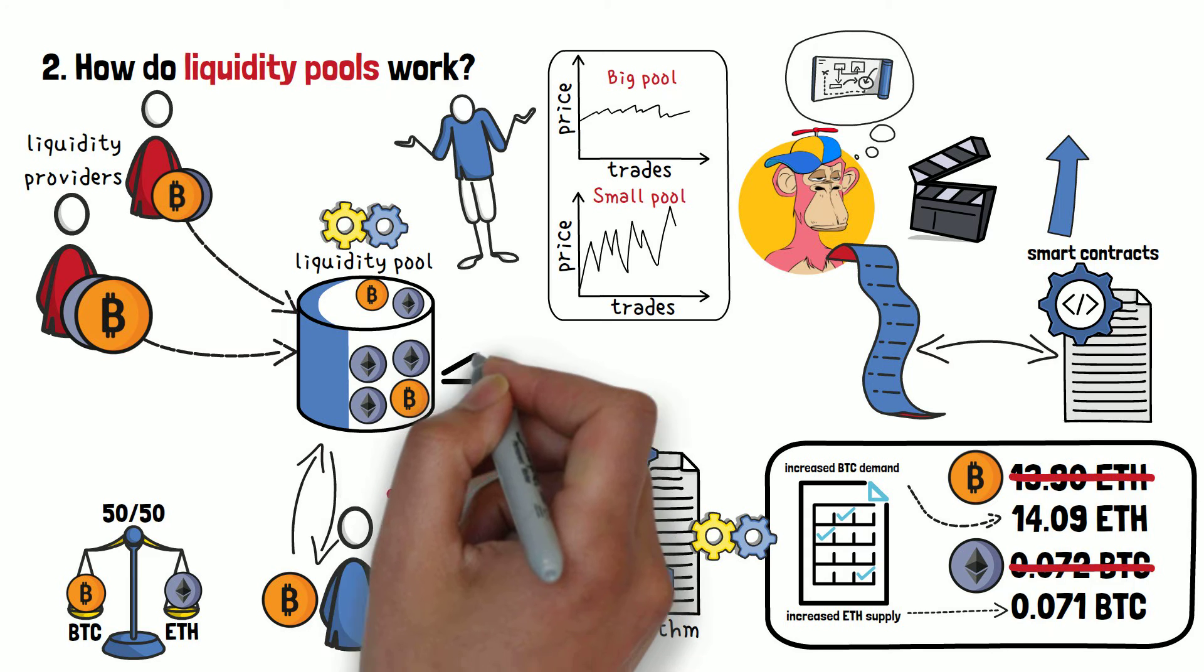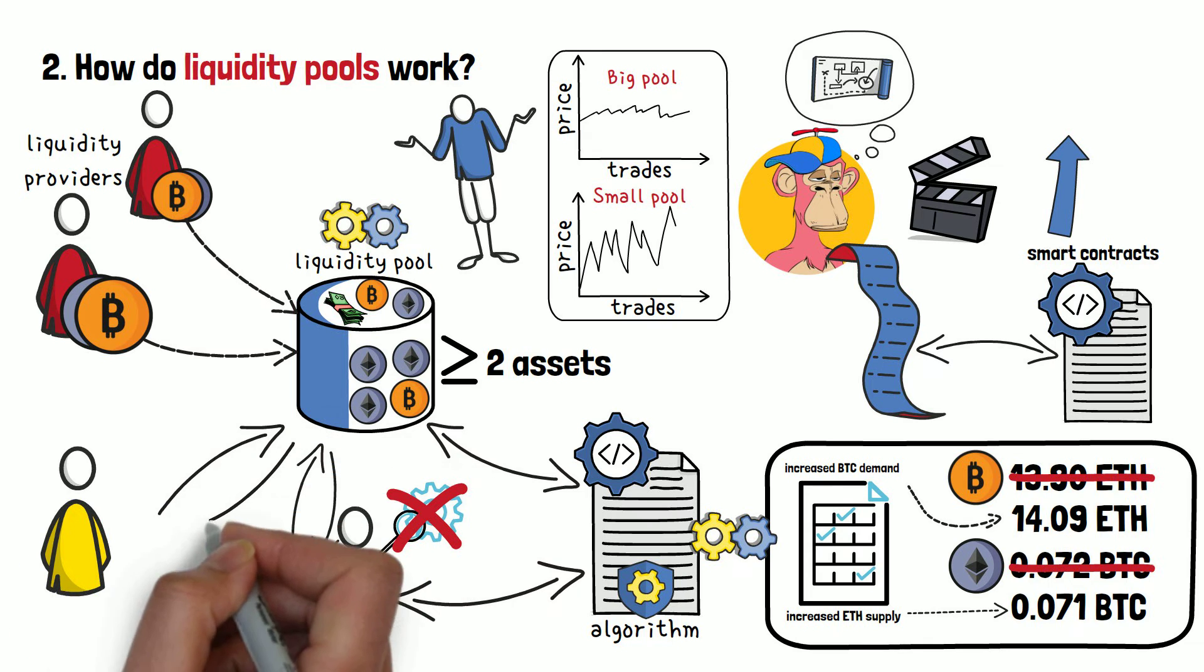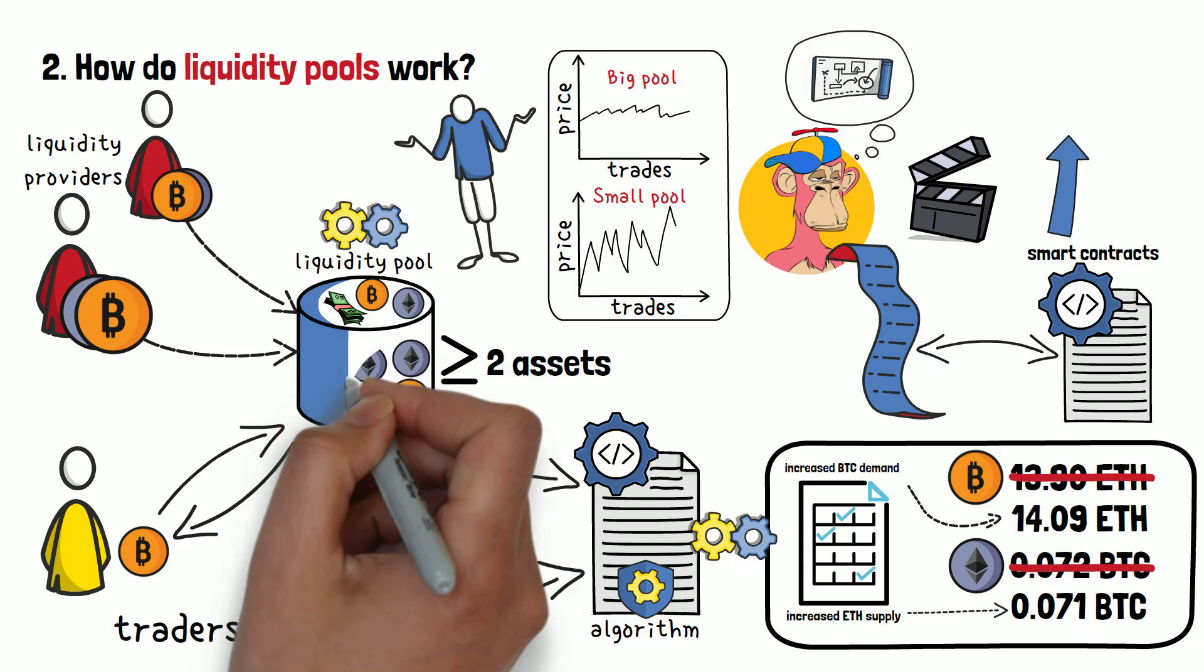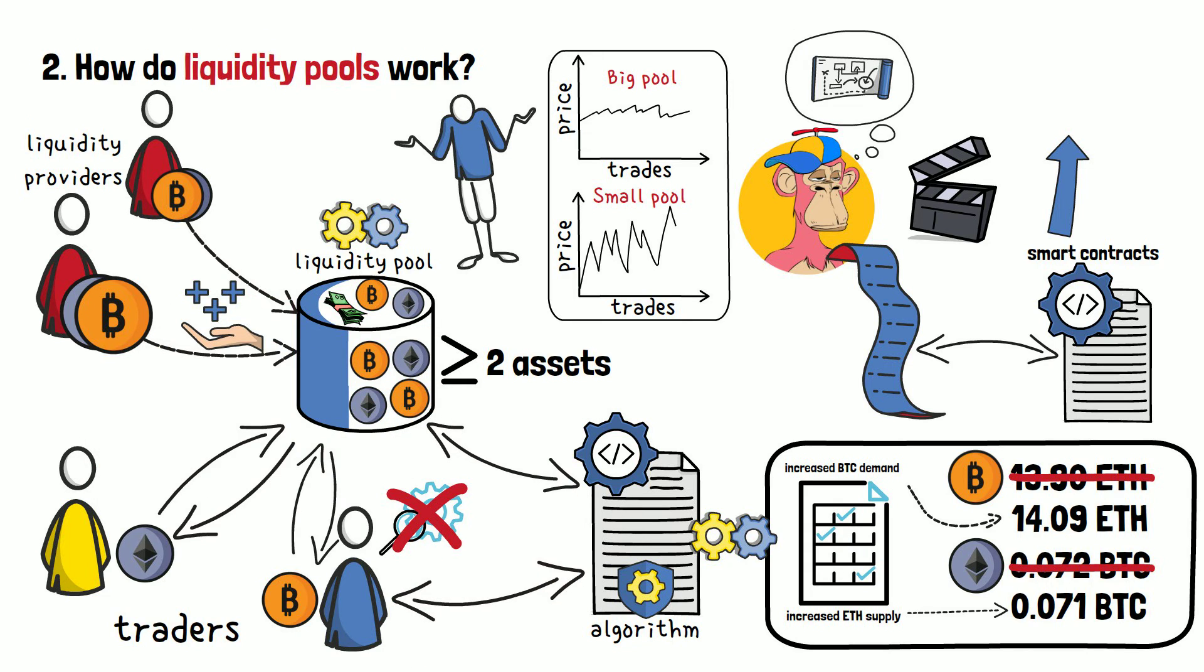Suffice to say that liquidity pools hold two or more assets, cryptocurrencies, United States dollars, and so on, inside of them, and allow people to trade on decentralized exchange platforms. In turn, while individuals use the pools for their trades, investors will receive interest on their investments, over time. It's pretty simple.